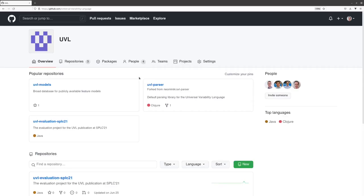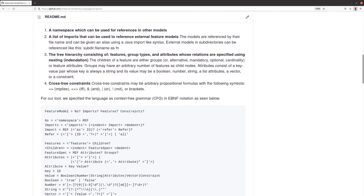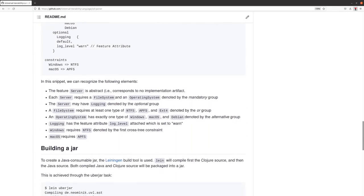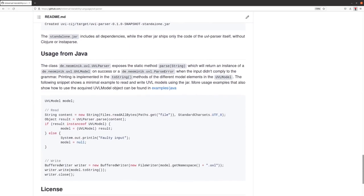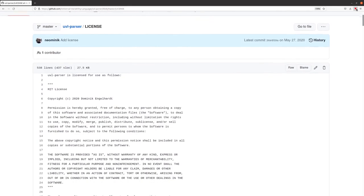First, we provide open access repositories for UVL containing the language design in a serializable format, a parser library, documentation and examples on how to use UVL. And furthermore, we also provide licenses for a wide usage of UVL, even in commercial settings.